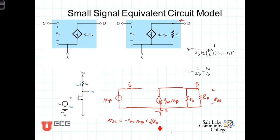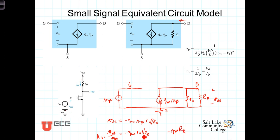Let's calculate the gain. VDS over VGS — the overall gain — is equal to negative G sub M times R0 in parallel with R sub D. You'll recall that when we calculated the overall gain without channel length modulation, it was just negative G sub M times R sub D. So the fact that R0 is in parallel with R sub D causes the overall gain to be reduced by the amount that that resistor reduces the effective drain resistance.